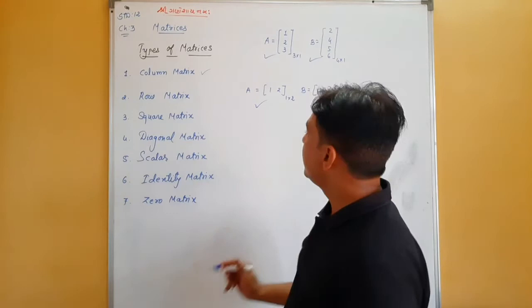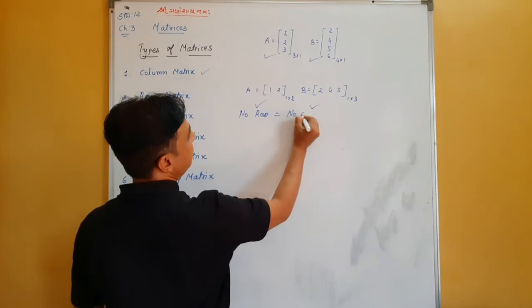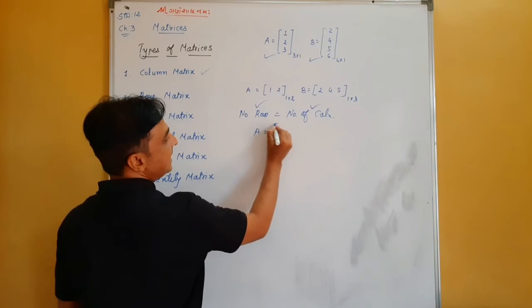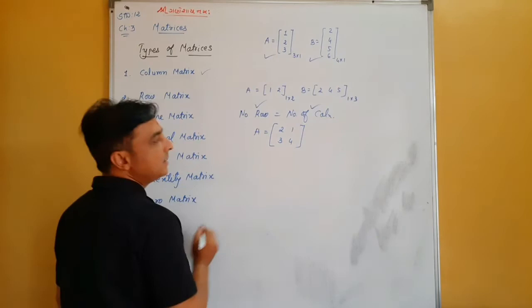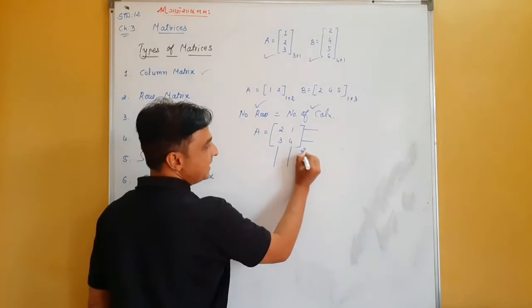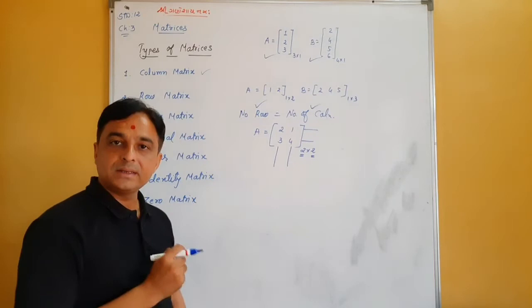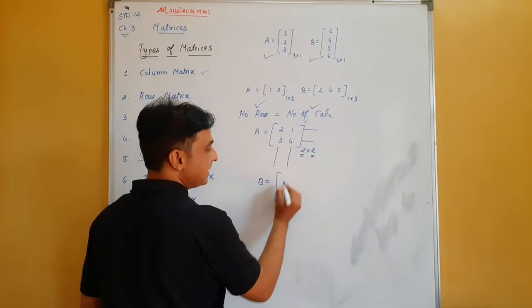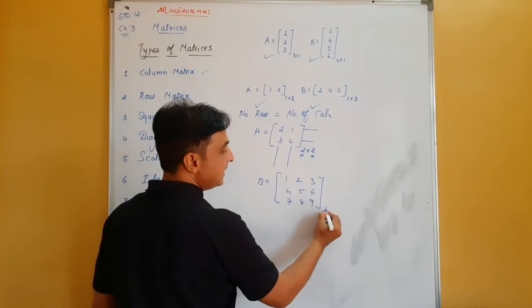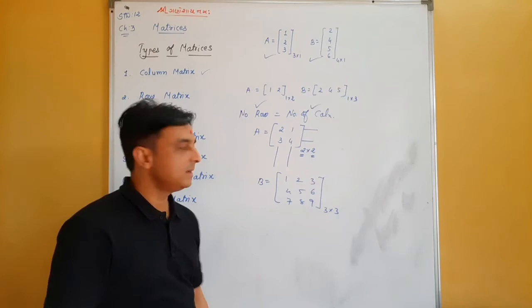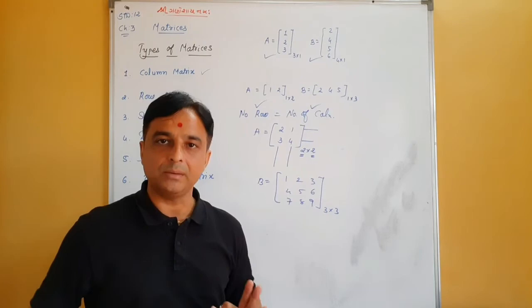A square matrix has the number of rows equal to the number of columns. For example, matrix A with 2 rows and 2 columns is a 2×2 square matrix. Similarly, matrix B = [1, 2, 3; 4, 5, 6; 7, 8, 10] is a 3×3 square matrix. A square matrix has the same number of rows and columns.